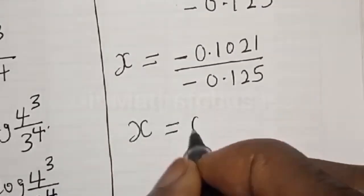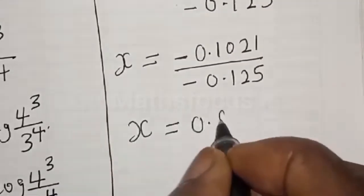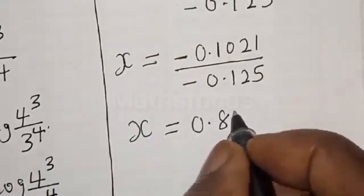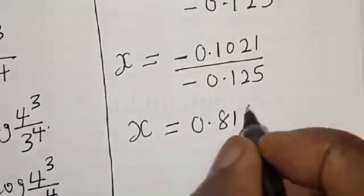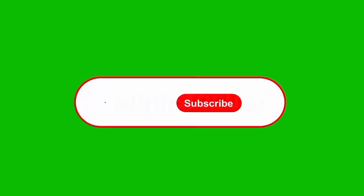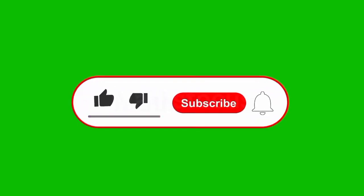The numerator becomes 1.8063 minus 1.9084, which is negative 0.1021, divided by negative 0.125. Therefore our final answer is x equals 0.1021 divided by 0.125, which equals approximately 0.8168.